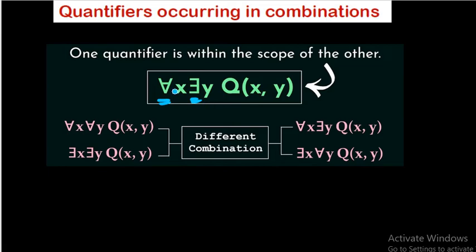There are four possible ways of combination: for all x, for all y, Q(x,y); there exists x, there exists y, Q(x,y); for all x, there exists y, Q(x,y); and there exists x, for all y, Q(x,y). These are the four possible ways of combination. Let's see an example and find the truth values of a proposition.